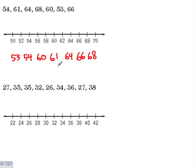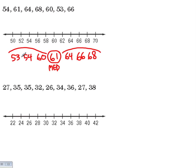First we're going to find the median of this set of numbers — that's the number in the middle. So 61 is the median. Then we're going to find the quartiles, which are the medians of the bottom half and the top half. The median of the bottom half is 54 — that's called the lower quartile. And the median of the top half is 66 — that's called the upper quartile.